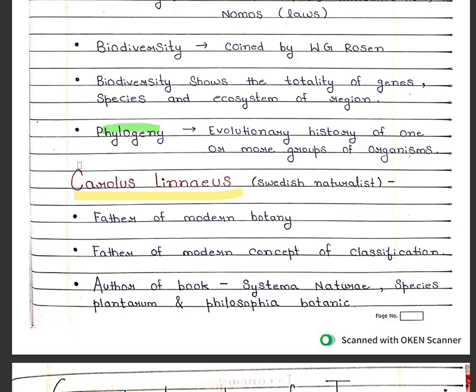Phylogeny is the evolutionary history of one or more groups of organisms.